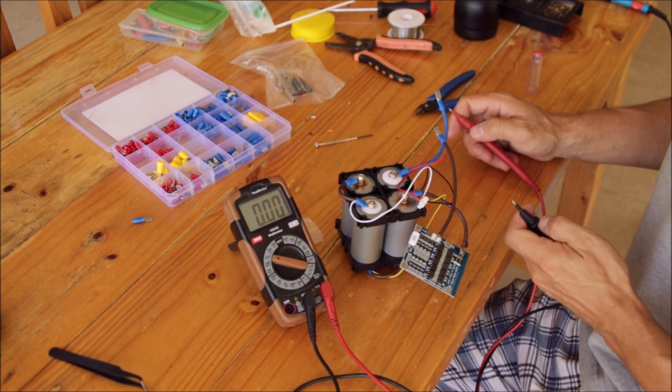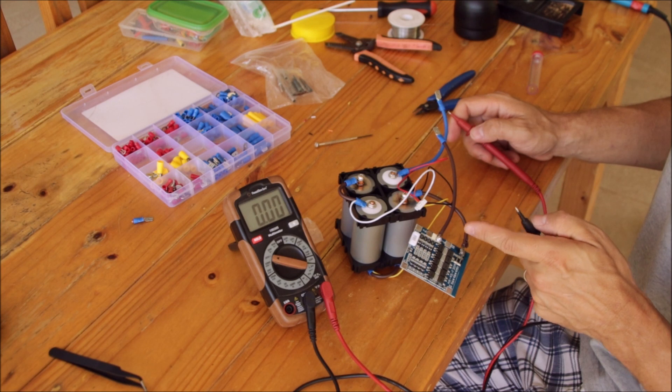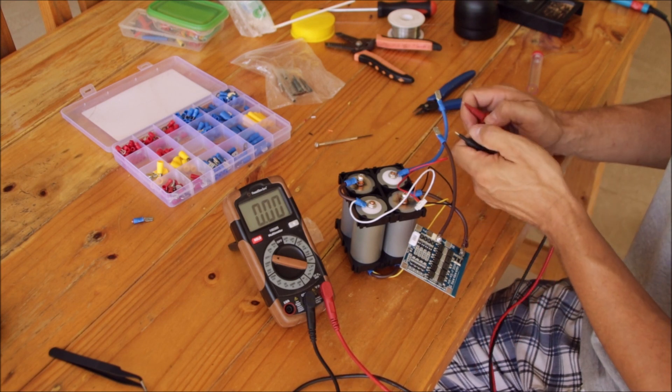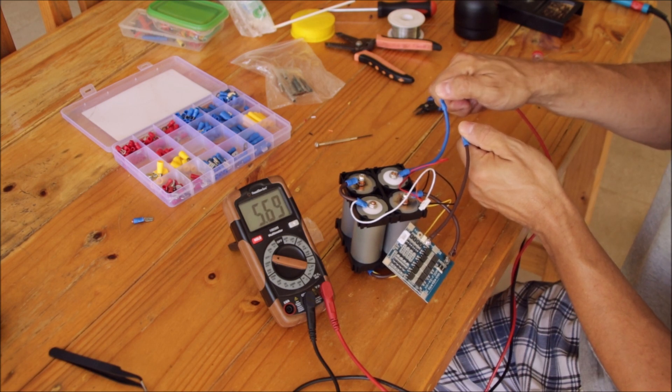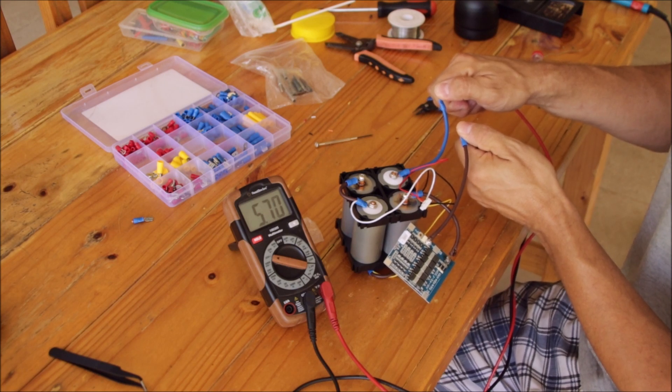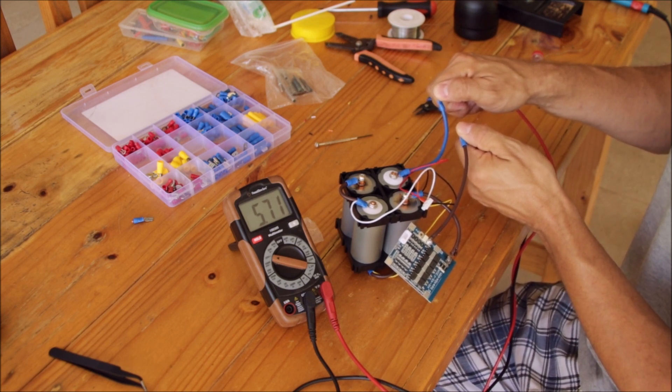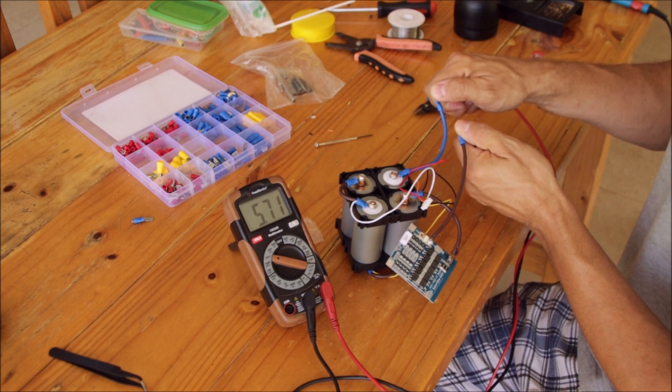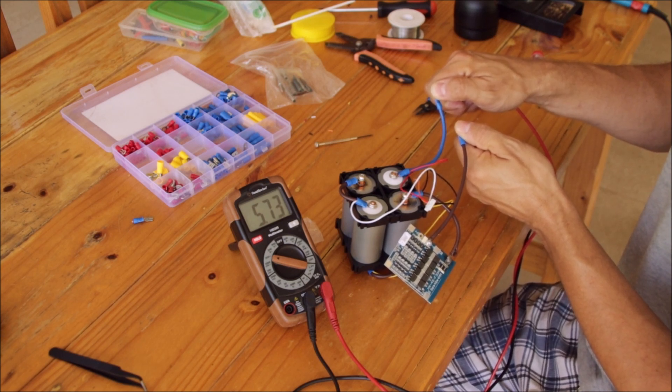Let's check the function of the BMS now. We have now the balance leads are not connected, so the BMS should be shut. Let's check this here between plus minus out. We have 5.7 volts. I don't know if this is because there is no load connected to this. Maybe it is not pulled down to zero, so not fully closed, probably the MOSFETs. Let's check what it is showing when we connect the balance leads.